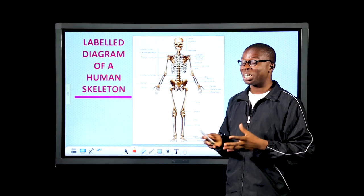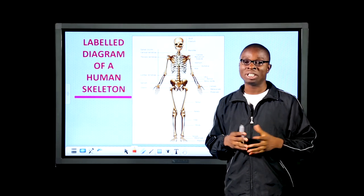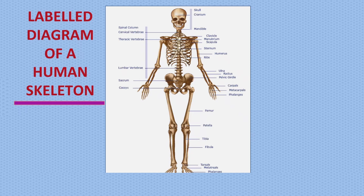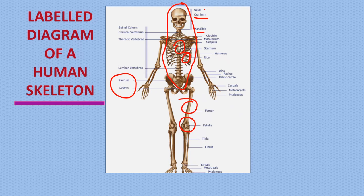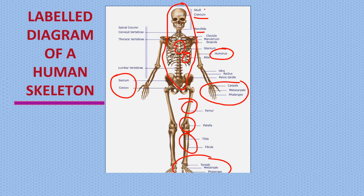Let's take a quick look at the diagram of the skeletal system, taking note of some bones of the axial and appendicular skeleton. The axial skeleton includes bones in the core of the body such as the cranium (skull), the mandible, the sternum, and the ribs. The appendicular skeleton includes bones attached to the axial skeleton, such as the hip bone, sacrum, coccyx, patella (kneecap), femur, tibia, fibula, tarsus, metatarsus, phalanges, carpus, metacarpus, and the humerus.